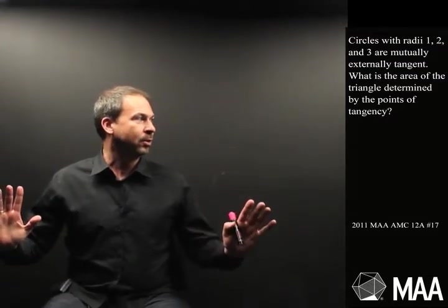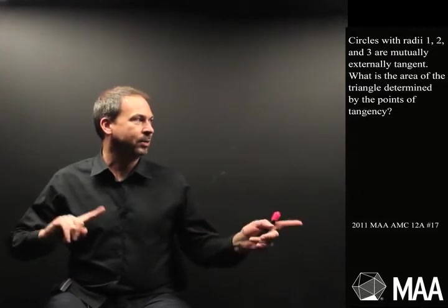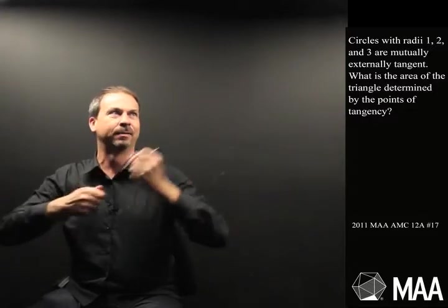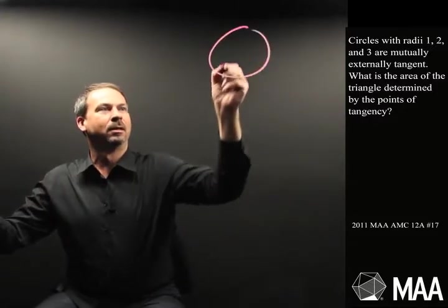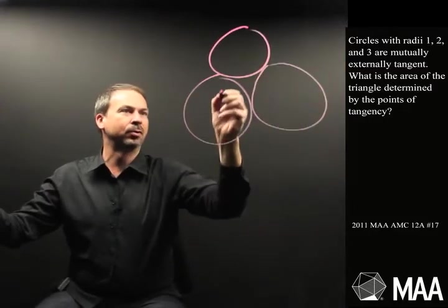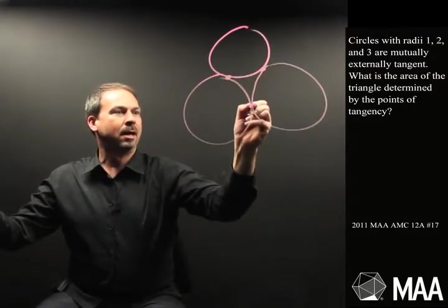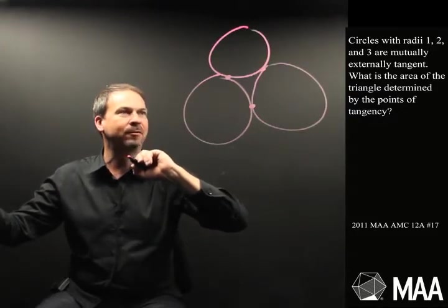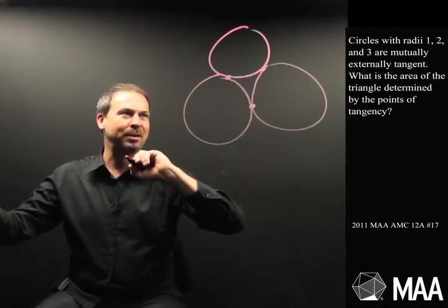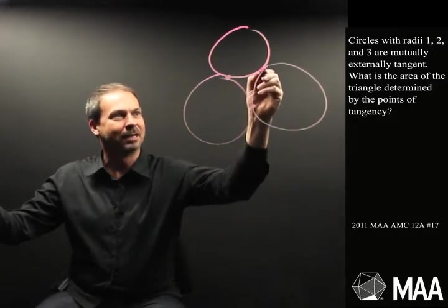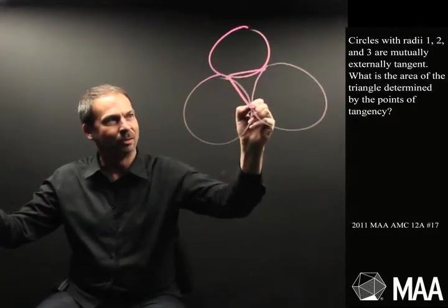Okay, obviously I've got to draw this. Three circles, radius 1, radius 2, radius 3, are mutually externally tangent. They touch each other from the outside of each other. All right, so a circle, a circle, and a circle. Radius 1, 2, and 3. Okay, what is the area of the triangle determined by the points of tangency? Don't really know what points of tangency means, but obviously it must mean the points where they're tangent to each other. So I guess I want the area of this triangle here.